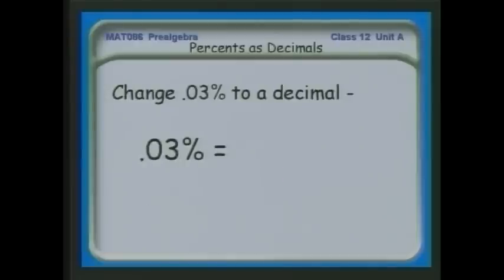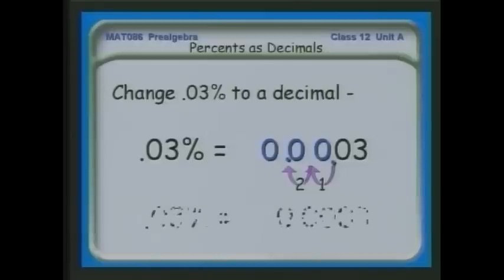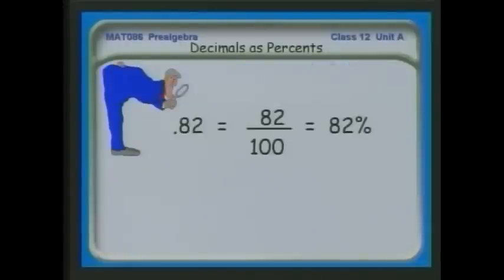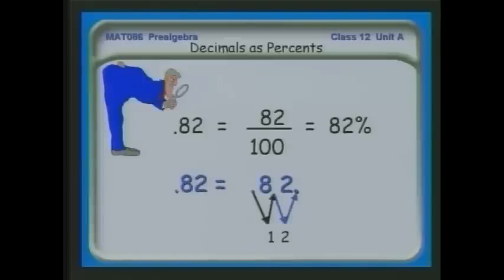How about 0.03% as a decimal? I do the same thing — move the decimal point two places to the left — and 0.03% becomes 0.0003 as a decimal. So we've gone from a percent to a decimal. Now we're going to reverse the procedure and go from a decimal to a percent. In this case we move the decimal point two places to the right: 0.82 is equivalent to 82%.